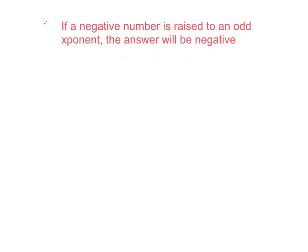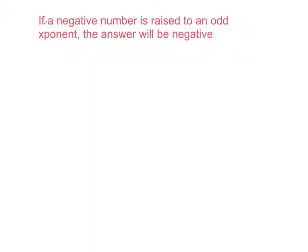There is a rule of thumb. If a negative number is raised to an odd exponent, you know, odd like one, three, five, seven, odd exponent, the answer will be negative. So that's worth writing down. And that's how some people kind of process it. So let me just make that legible. So if a negative number is raised to an odd exponent, then the answer will be negative.